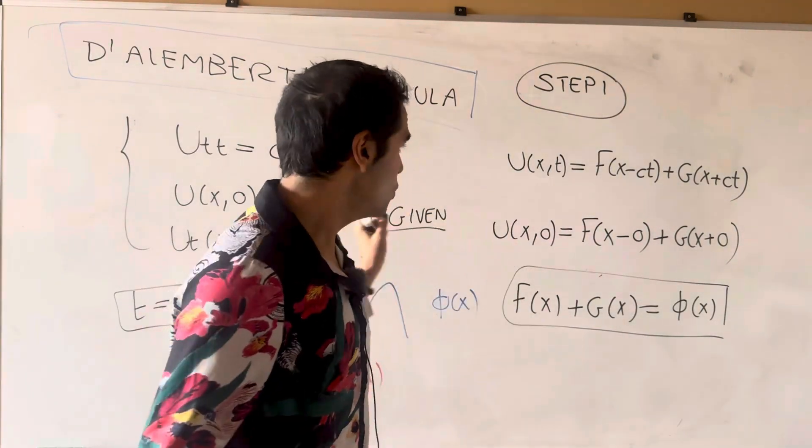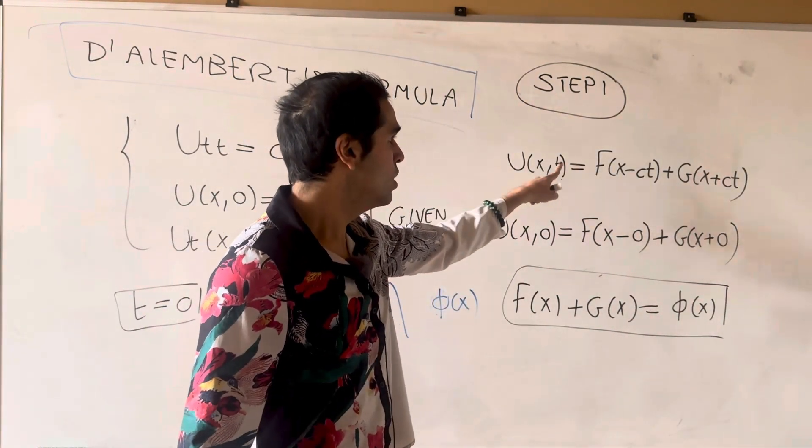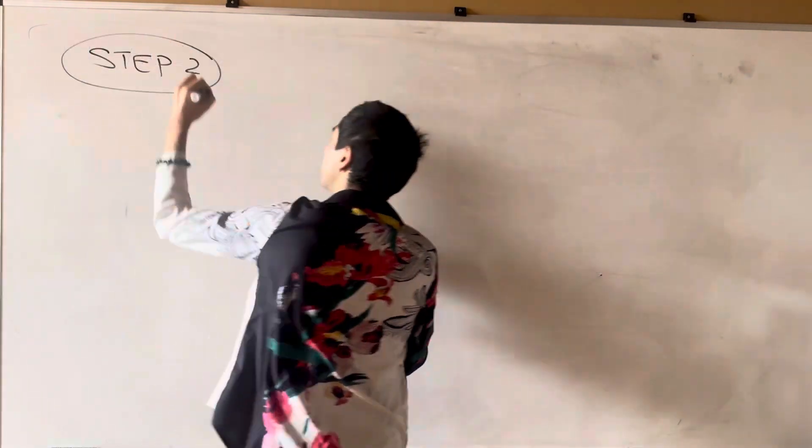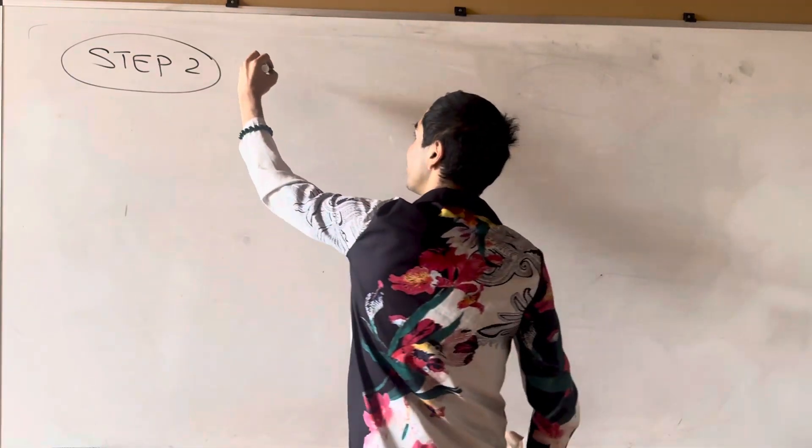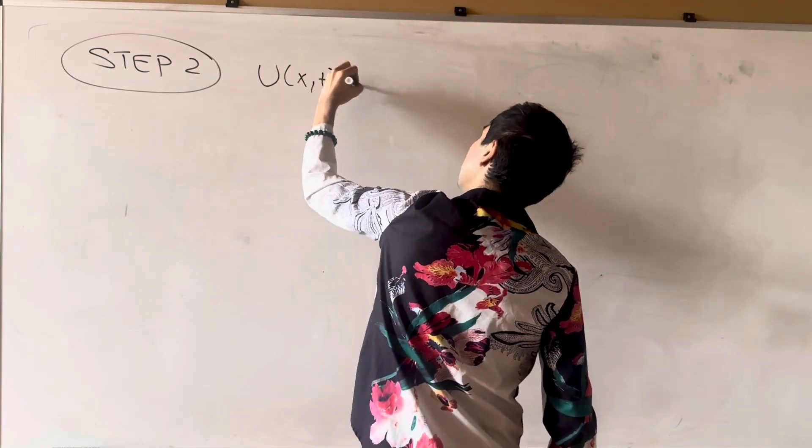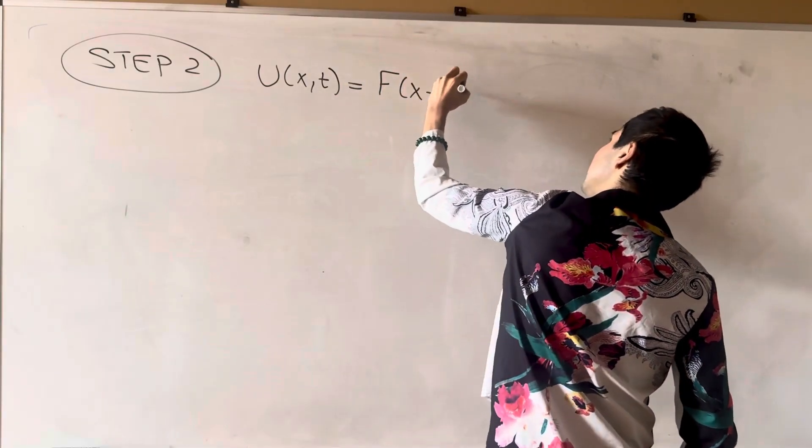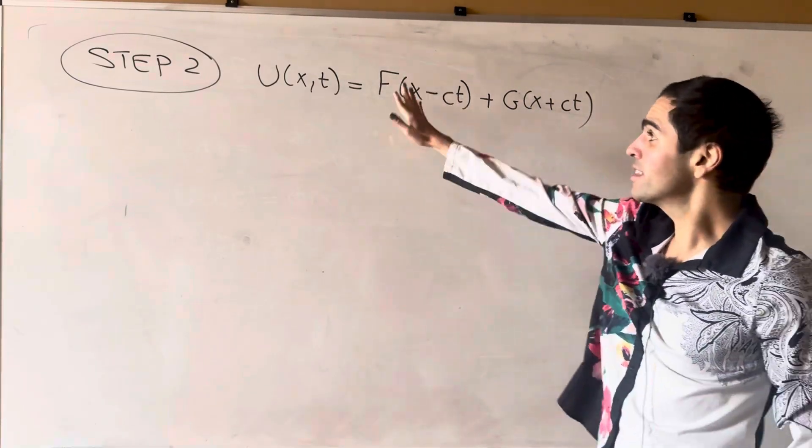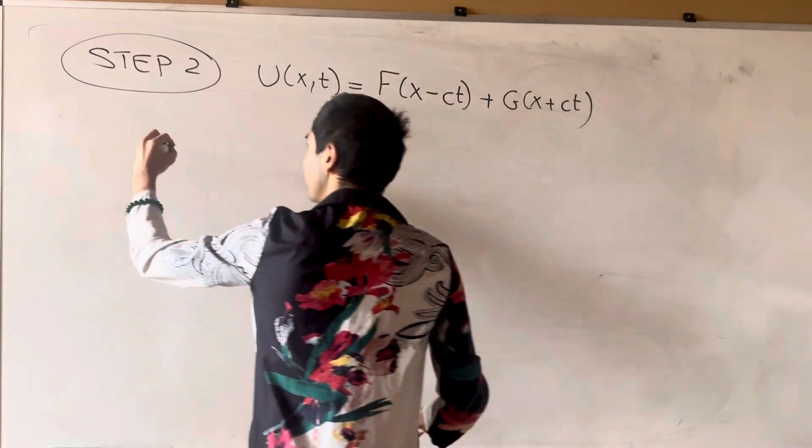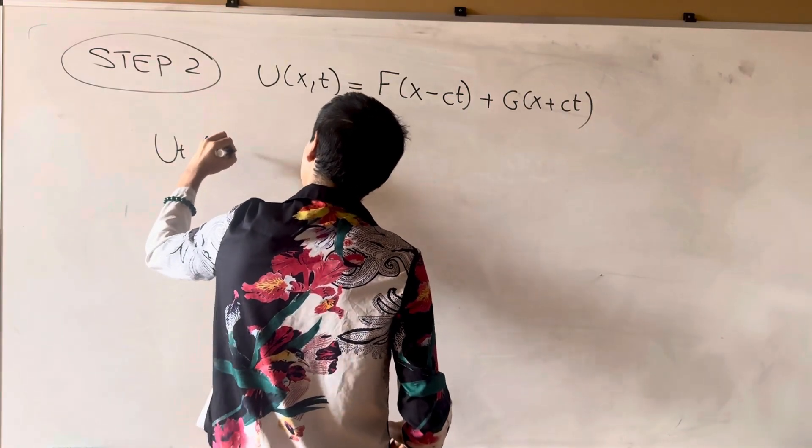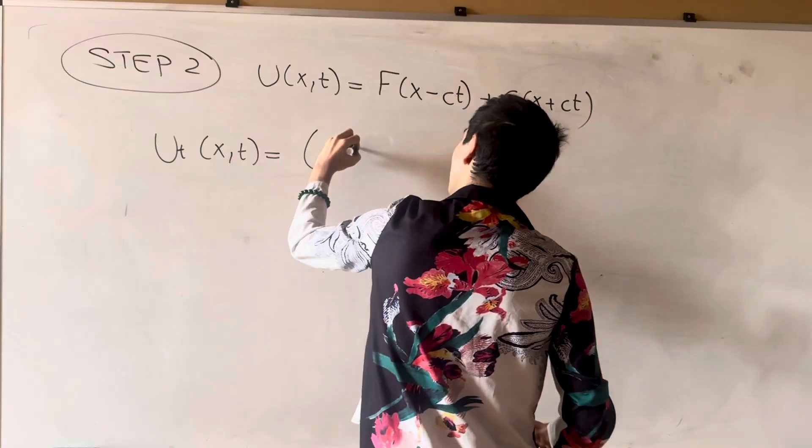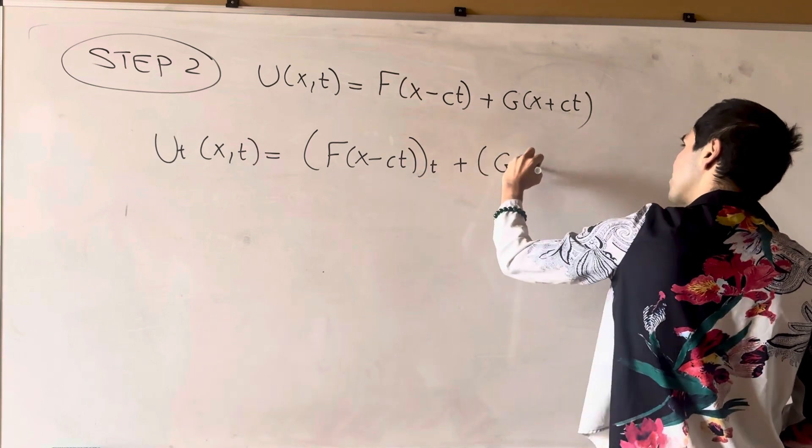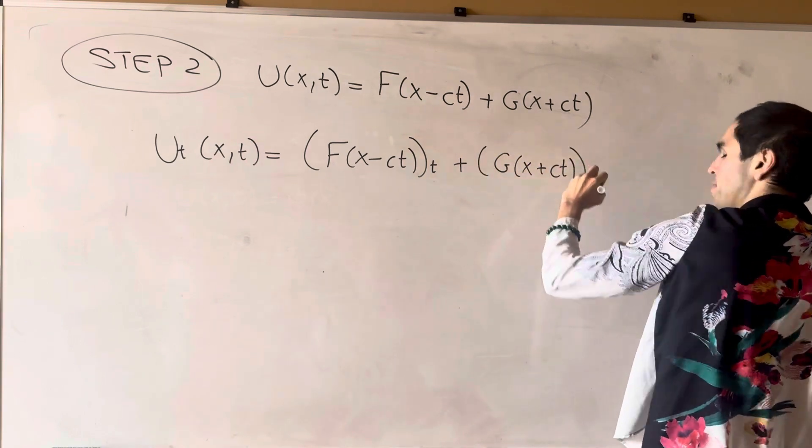And now, to use a second equation, all we need to do is differentiate this with respect to t, and then set t equals zero. So once again, remember our general solution. u of x,t is f of x minus ct plus g of x plus ct. And, as I promised, we first need to differentiate this with respect to t. So u_t of x,t is the derivative of f of x minus ct with respect to t, and then g of x plus ct with respect to t.